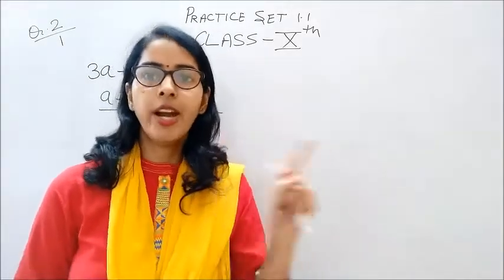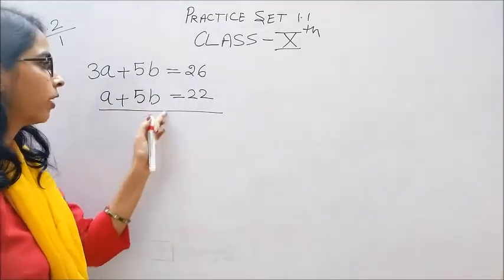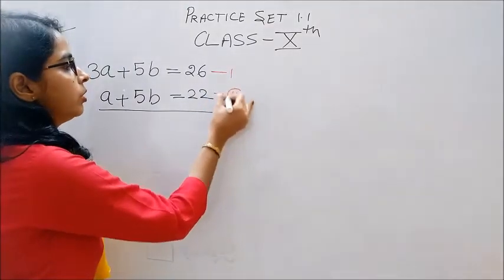This is question 2, part 1 of question 2. 3a plus 5b is equal to 26, a plus 5b is equal to 22. This is equation 1, this is equation 2.